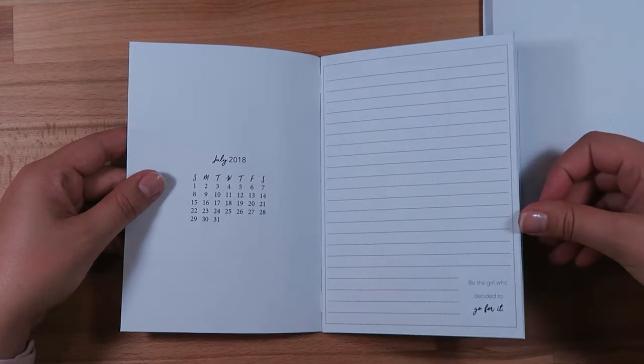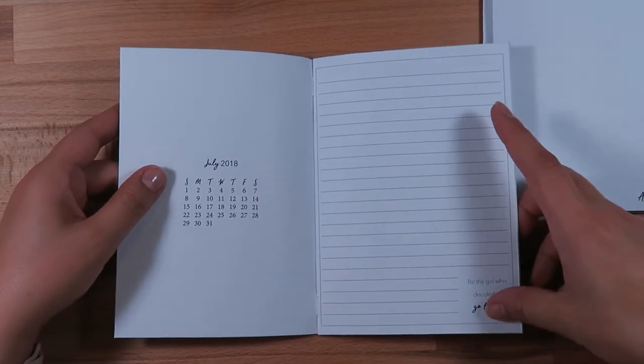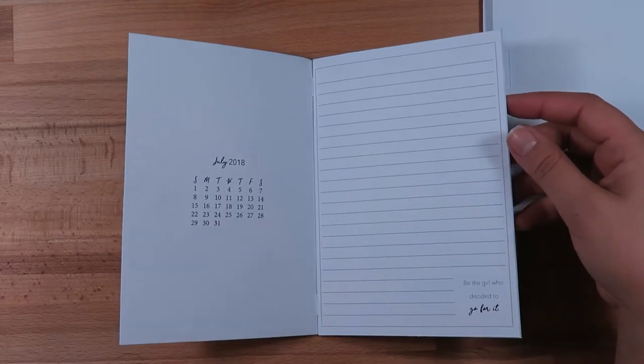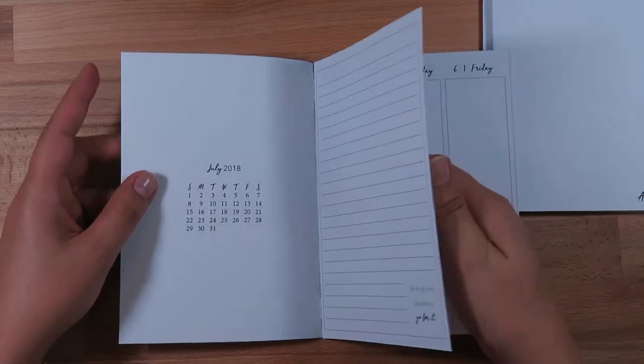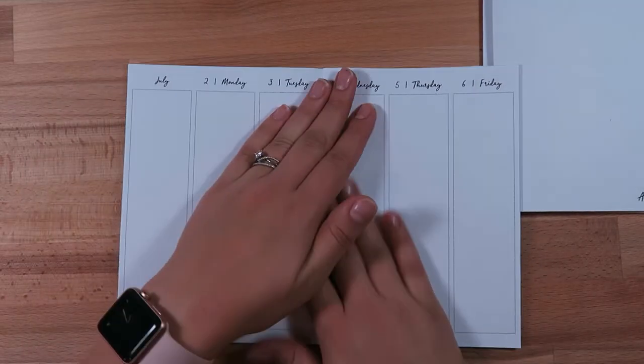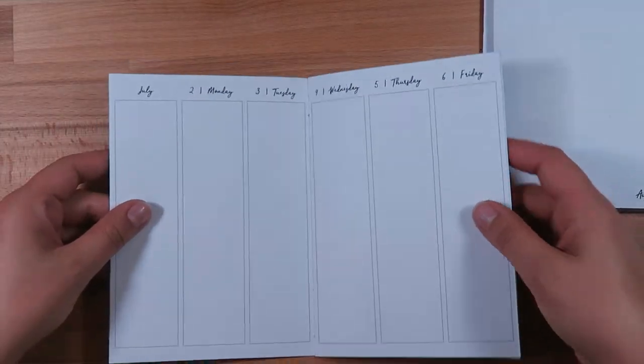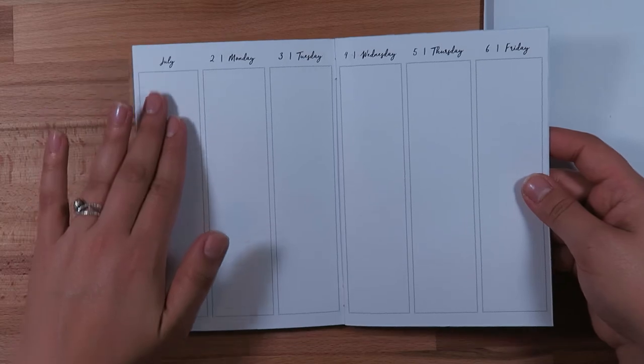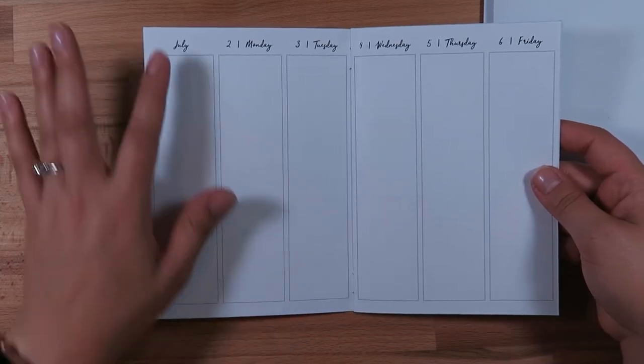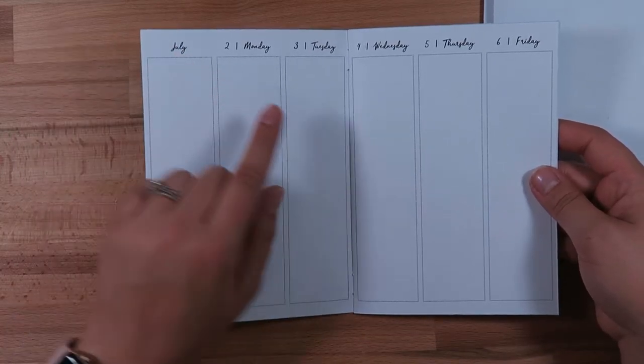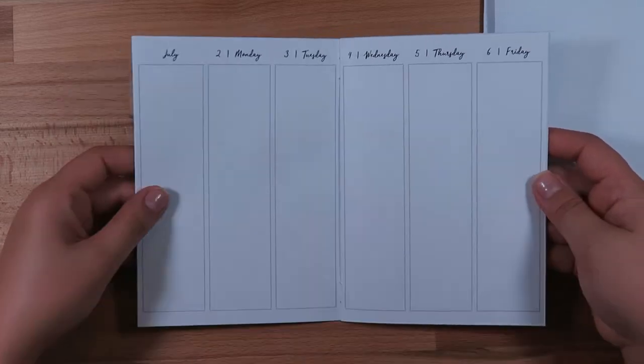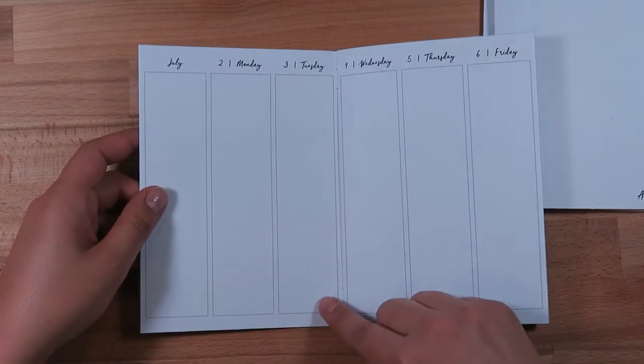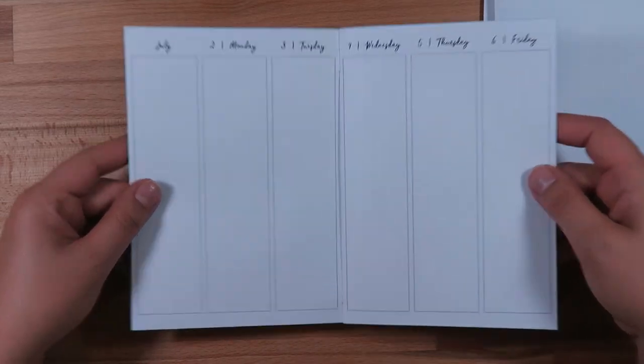You have your month at a glance calendar for 2018, and these are dated. Then you have a notes page right here on the front, and each notes page has a different little motivational quote in the bottom right corner.